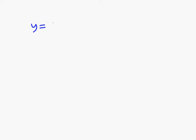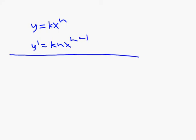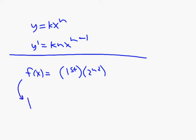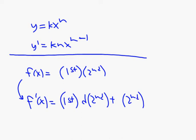Let's start thinking about what we know. We know how to take the derivative of something like a number times x to the n power — then y prime is k times x to the n minus 1. That's called the power rule for derivatives. We also know that if we have a function equal to the product of two functions, we have usually two options: multiply them out, or use the product rule, which is first times the derivative of second plus second times the derivative of the first — first d second plus second d first.